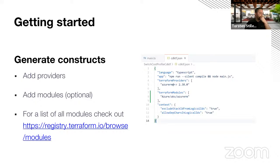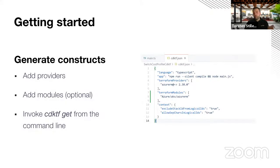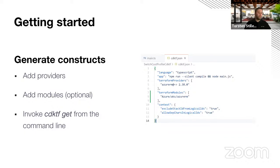The next thing you need to do is generate the Azure provider constructs or type bindings. This is what you do when you run cdktf get on the command line. The output should be something like 'Generated X Python constructs in the output directory.' Then you can have a look at that — you'll see really Python code, or Java or whatever language you chose — with all the objects you're usually familiar with as Terraform resources.